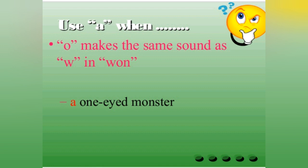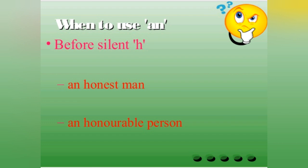We use an before silent h. That is, the word starts with a consonant letter h but it has a vowel sound. For example: honest man. Here h is silent and we pronounce from o. Honorable man. Here also h is silent and we read as o, honorable person. So an honorable person.